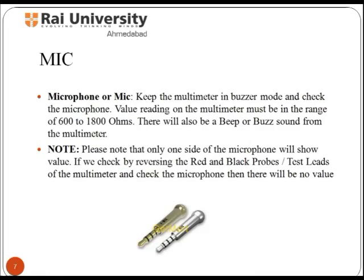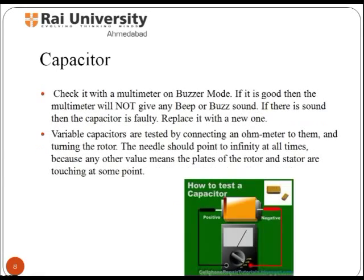Cell phones have such tiny microphones that it is incredible how they reproduce sound. To check the mic, keep the multimeter in buzzer mode and check the microphone. The value reading on the multimeter must be between 600 to 1800, and there will also be a beep or buzz sound from the multimeter.